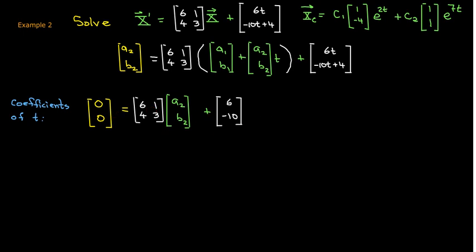And I can rewrite that as a system of equations. I would have to bring this 6, negative 10 to the other side of the equation. That's why I now have a negative 6 and a positive 10. And then just solve that system of equations. And that gives me a sub 2 equals negative 2 and b sub 2 equals 6.